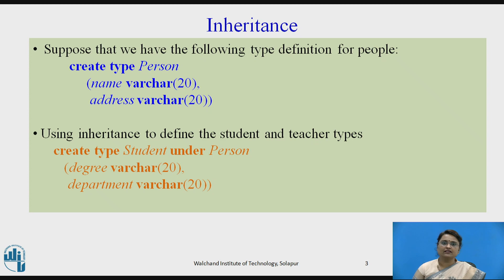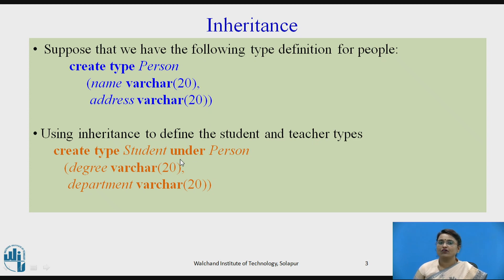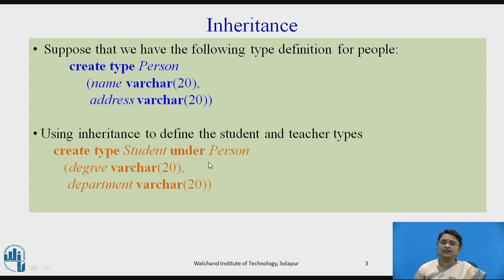Consider the example we have defined here. Suppose we have the following type definition: create type Person with name and address. Now this person type we want to inherit in another type. So here we are defining another type called Student. We know that a student also holds the characteristics of a person, like name and address. Inheritance means reusability — already defined things are reused and extended.